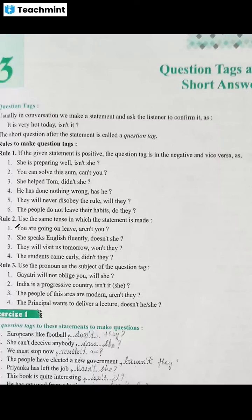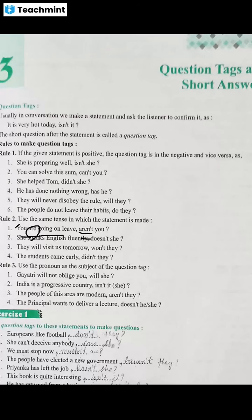Example: you are going on leave, aren't you? The helping verb 'are' is written in the sentence, so 'are' is also used in the tag. This sentence is positive, so the tag is negative — 'aren't you?' Then the subject is 'you', and we add an interrogative sign.